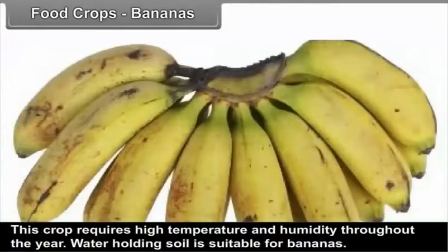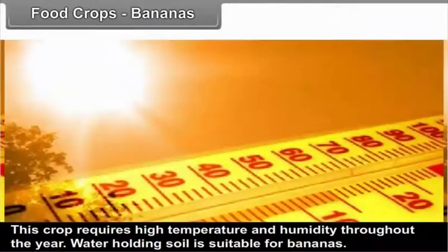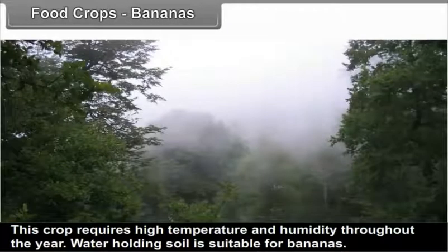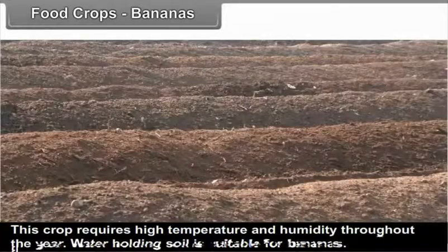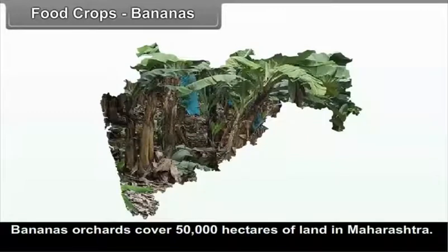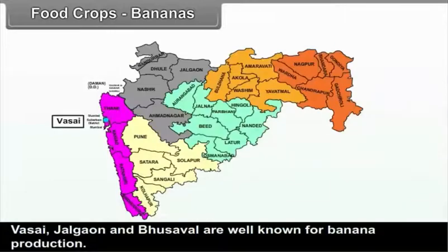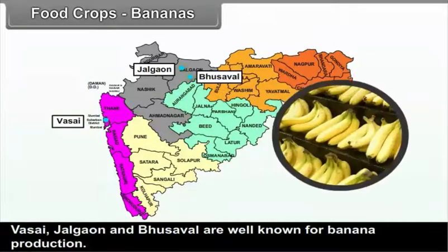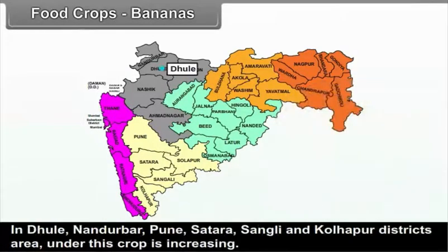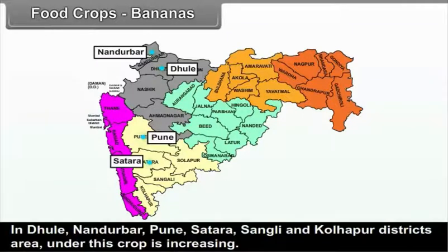Bananas require high temperature and humidity throughout the year, and water-holding soil is suitable. Banana orchards cover 50,000 hectares of land in Maharashtra. Vasai, Jalgao, and Bhusaval are well known for banana production. In Dhule, Nandurbar, Pune, Satara, Sangli, and Kolhapur districts, the area under this crop is increasing.